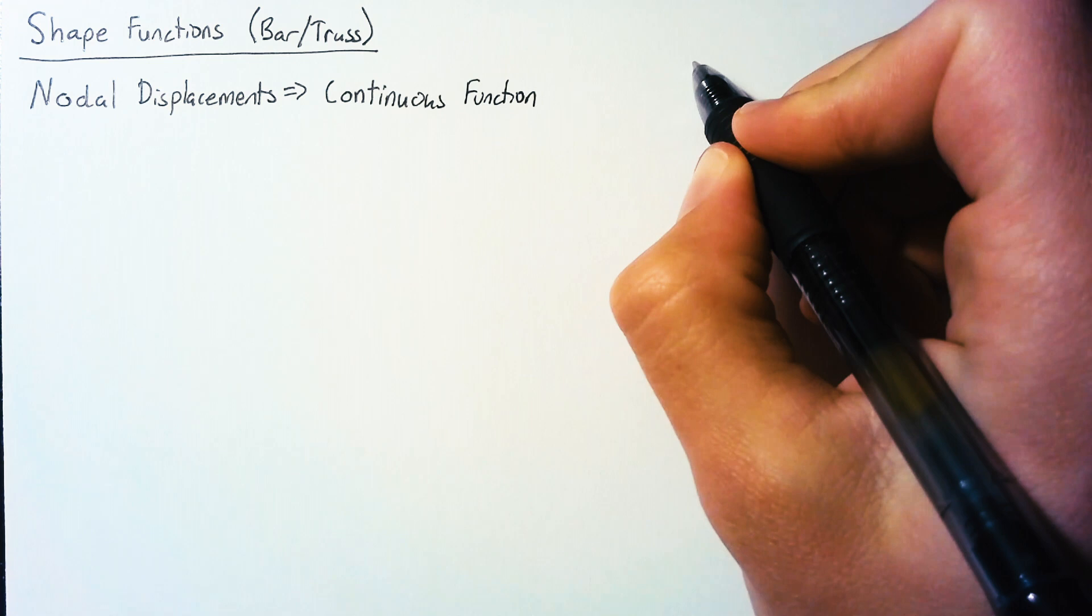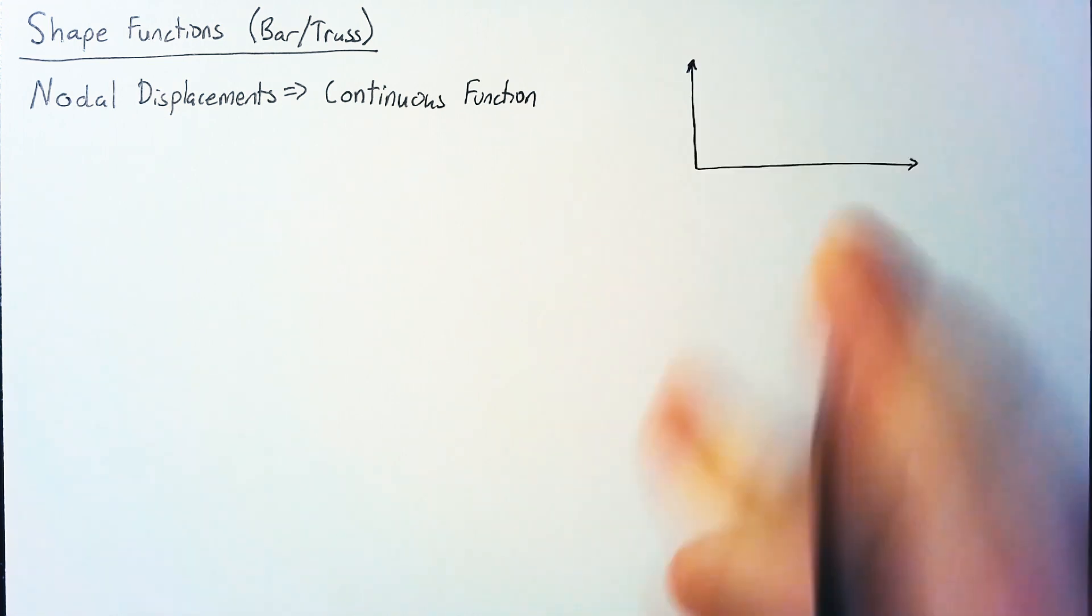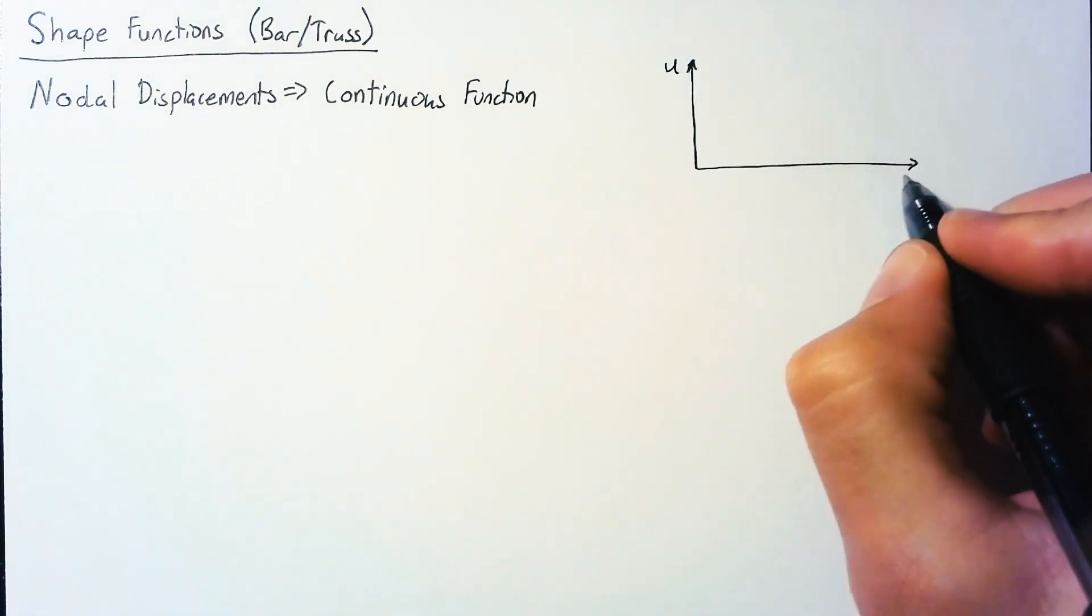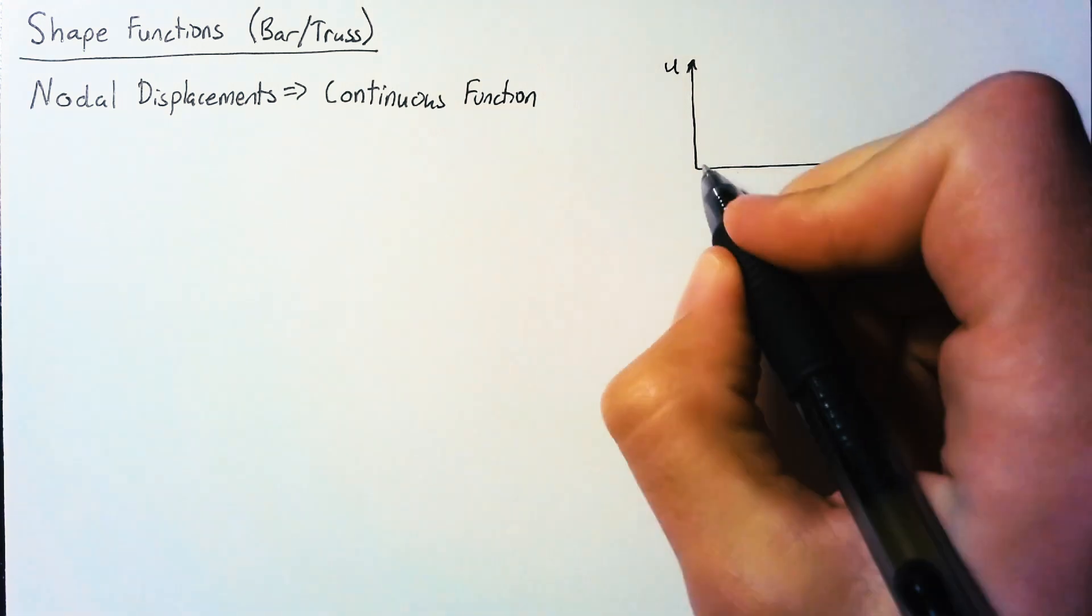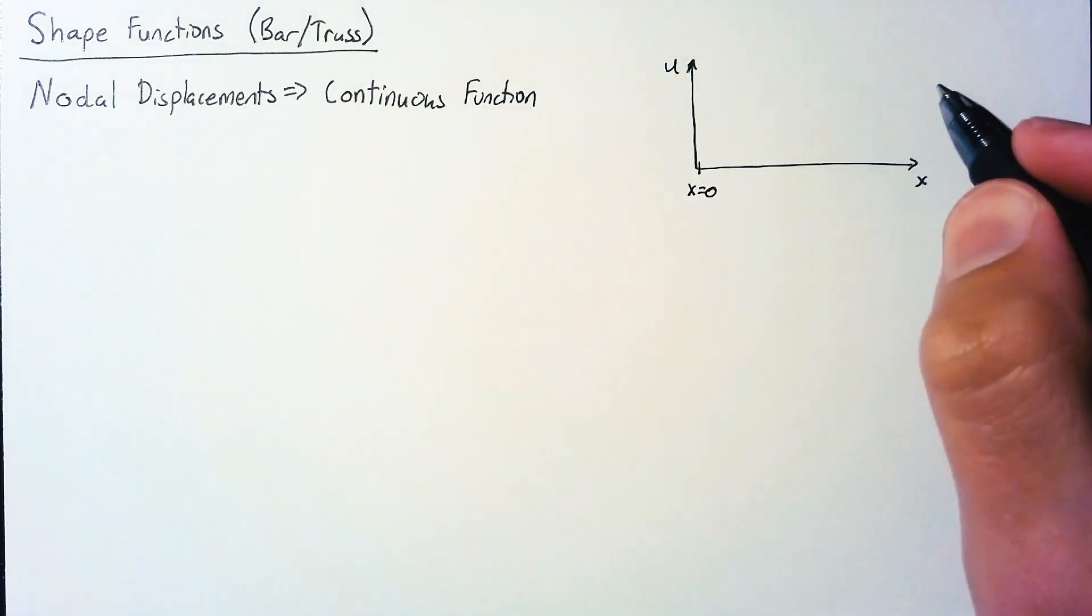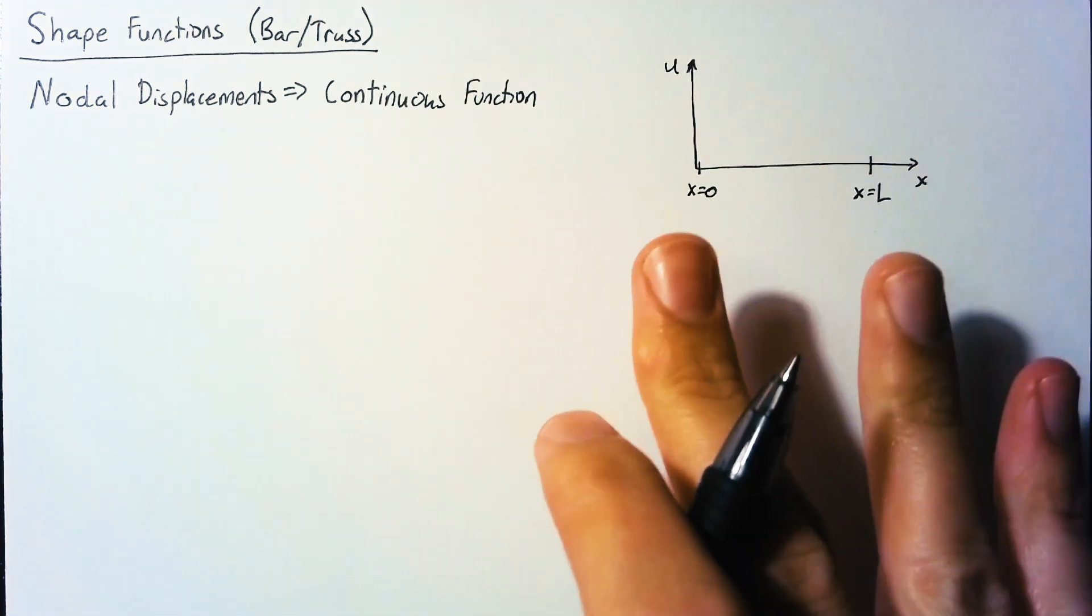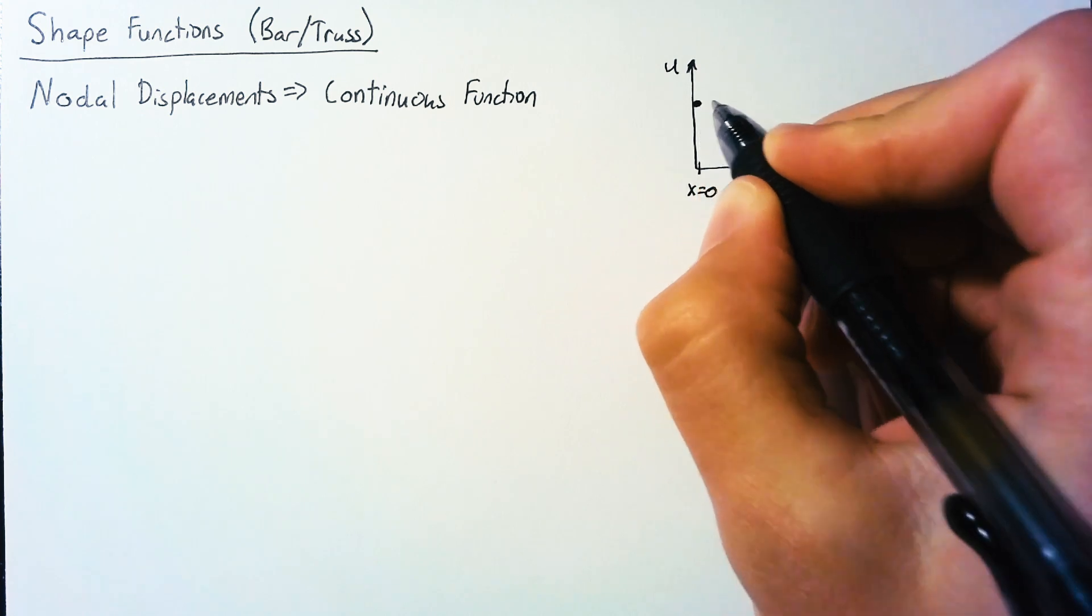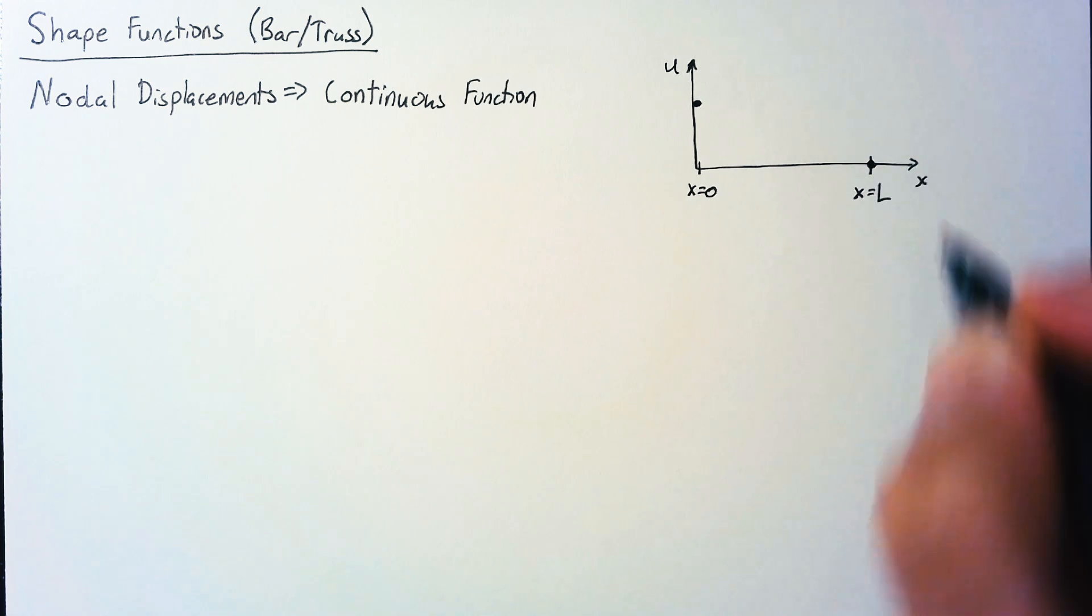So to get a picture of this, let's take a look at a simple example displacement. We're going to be looking at a graph of position versus displacement. Our bar is going to go from x equals 0 to x equals l, and our bar has a displacement of 1 at x equals 0, and a displacement of 0 at x equals l.